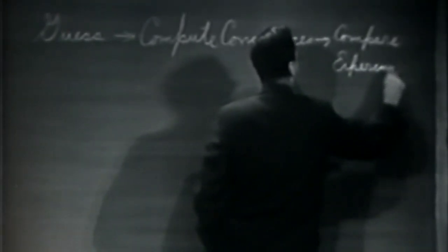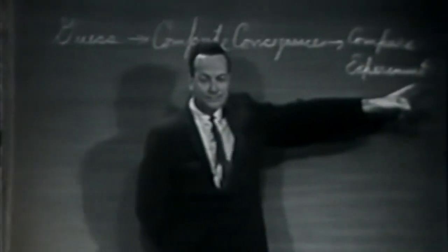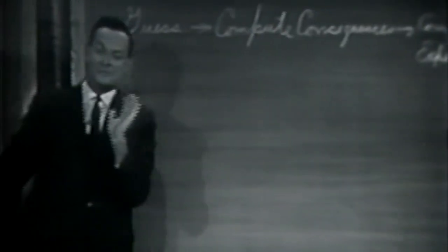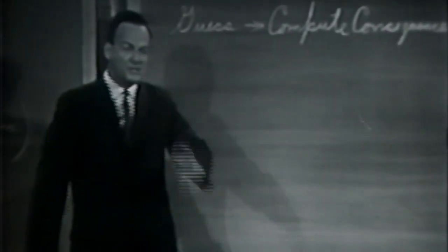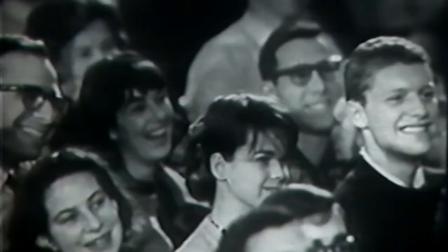And then we compare those computation results to nature — or we say compared to experiment or experience — compare it directly with observations to see if it works. If it disagrees with experiment, it's wrong. In that simple statement is the key to science. It doesn't make a difference how beautiful your guess is, it doesn't make a difference how smart you are, who made the guess, or what his name is — if it disagrees with experiment, it's wrong. That's all there is to it.